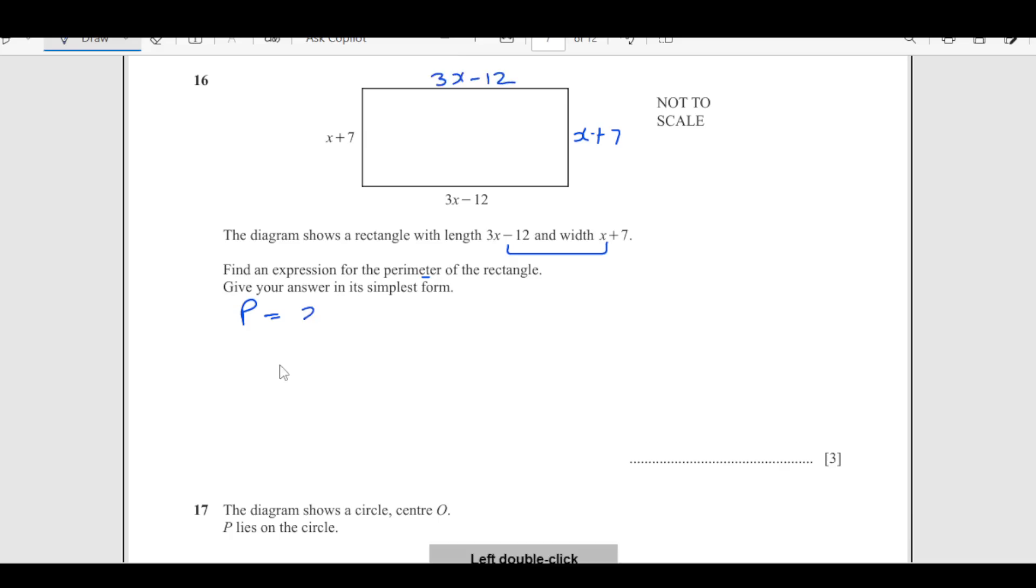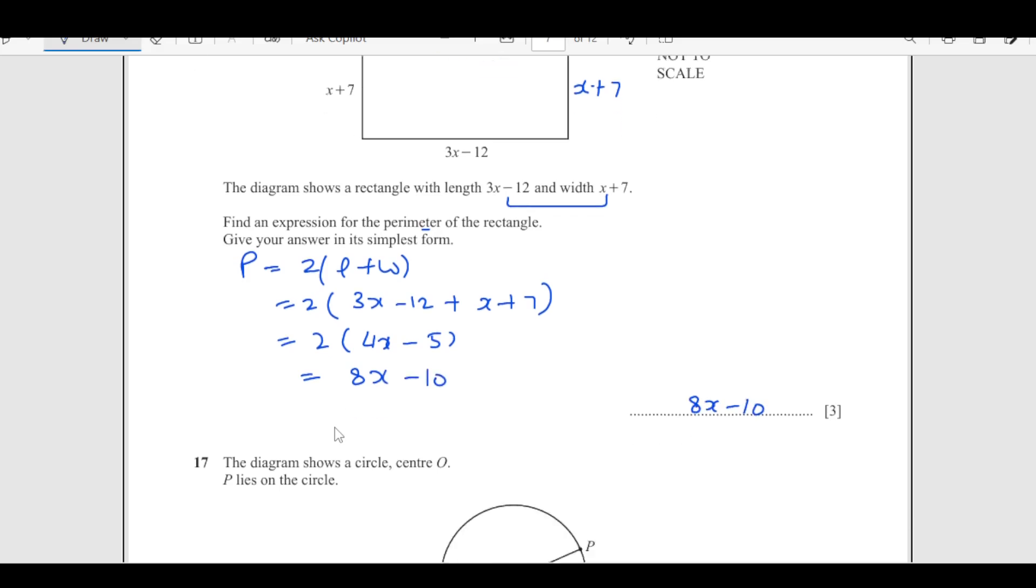Perimeter is 2 into length plus width. Twice of length, length is 3x minus 12, width is x plus 7. So this is going to be 3x plus x, that is 4x, minus 12 plus 7. This is going to be minus 5. So we can leave here or you can even expand 2 times 4x minus 5. 8x minus 10, this is the expression for the perimeter.